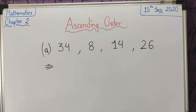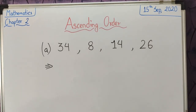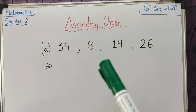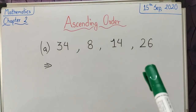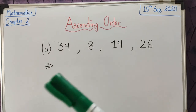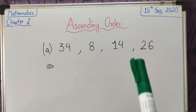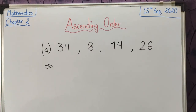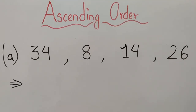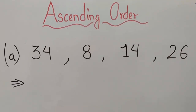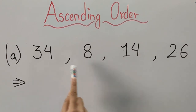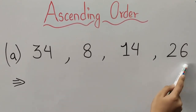So now we have some numbers over here and these are in mixed order. So we have to arrange these numbers in ascending order. We can see two digit numbers over here.